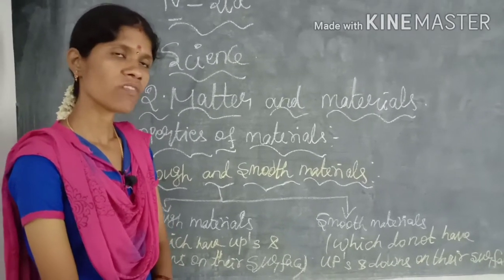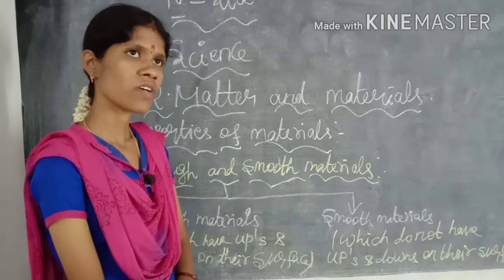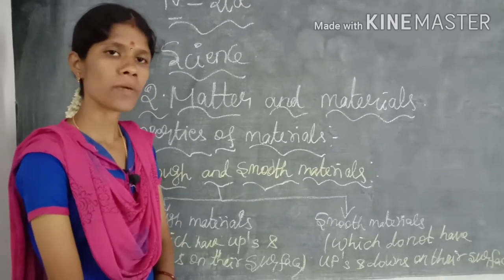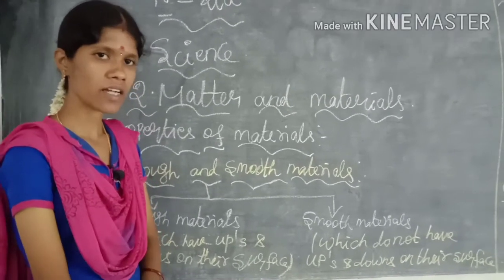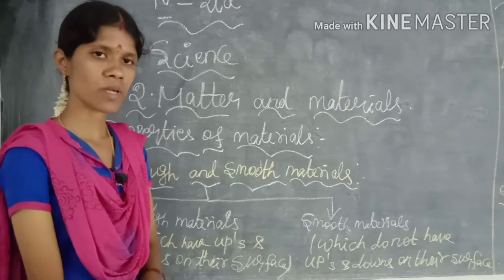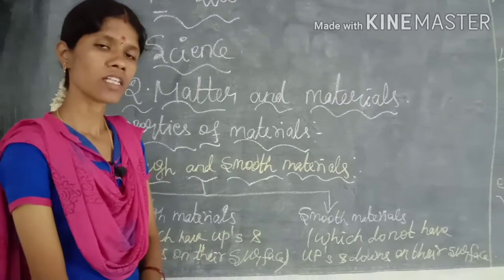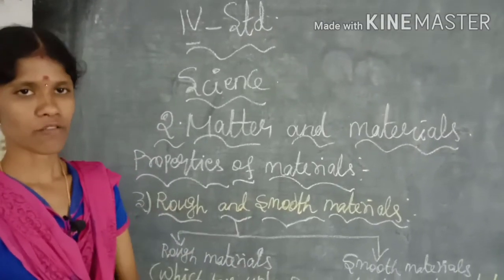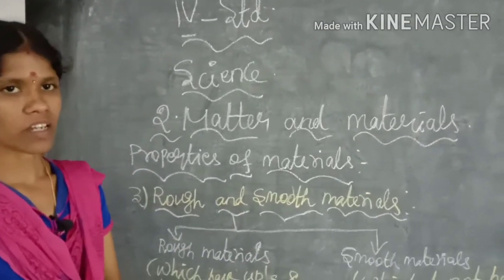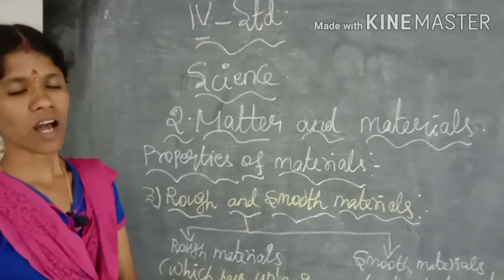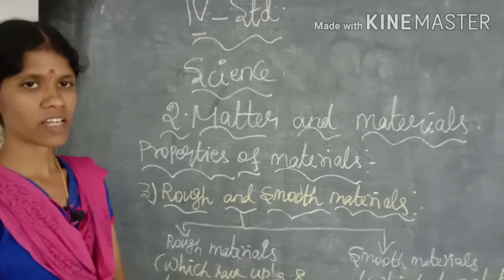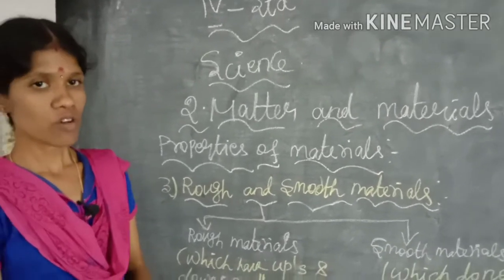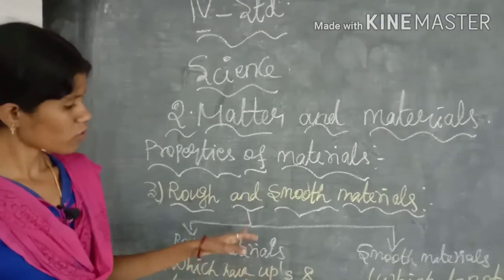Next, we have seen the different properties of materials. In those properties of materials, we saw the first one — hard and soft material — and the second one — shiny and dull material.